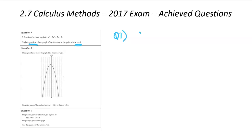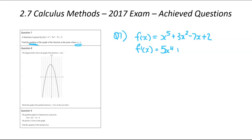We'll start by writing down our original equation: x⁵ + 3x² - 7x + 2. We now differentiate that function to find the gradient function. That's going to become 5x⁴, then 3 times 2 is 6x — we drop the power to 1, which is invisible so we drop it — and then minus 7. We can ignore the plus 2. So that's our differentiation.